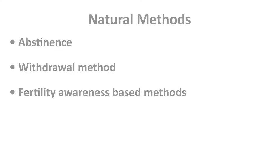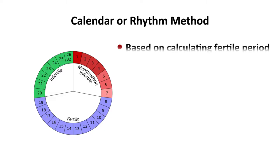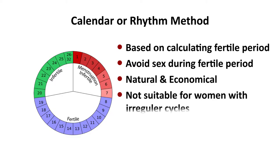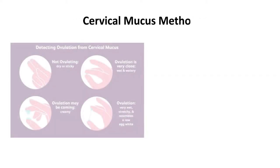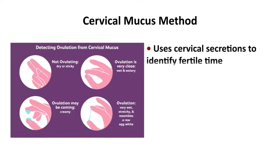Under natural methods, next are fertility awareness-based methods. First comes the calendar or rhythm method, which is based on calculating the fertile period; sex should be avoided during the fertile period. It is natural and economical but not suitable for women with irregular cycles. Next is the cervical mucus method, which uses cervical secretion to identify the fertile time; sex should be avoided during secretion days.